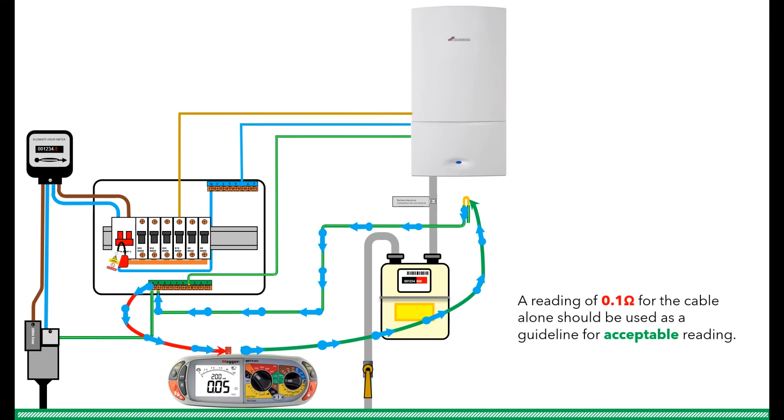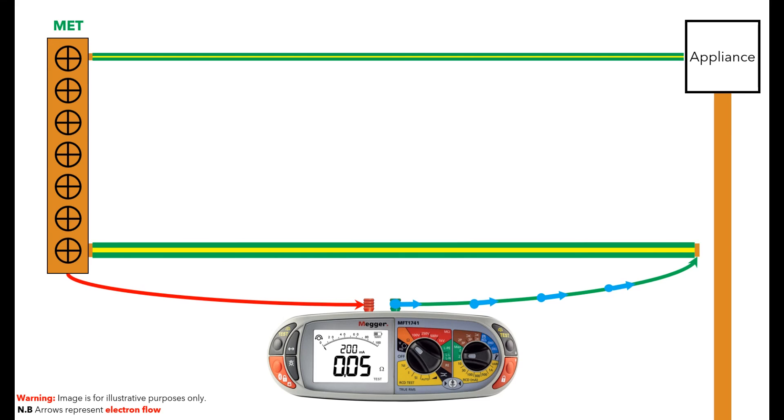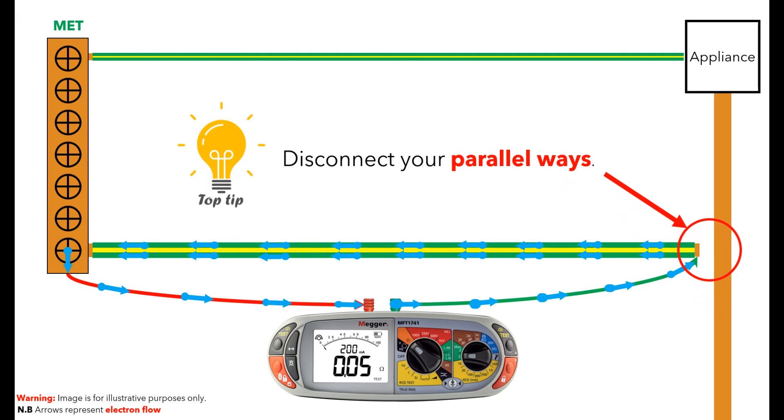Now when you test the conductor, the electrons can only flow in the main bonding conductor and not through any other parallel conductors. If we bring that back to the simplified model, we can now see that because the main bonding conductor is disconnected, the electron flow is only possible through the main bonding conductor as this is the only path back to the batteries in the MFT.